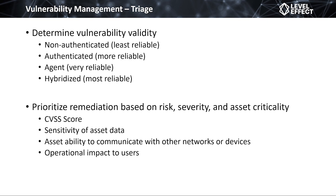We prioritize internet-accessible assets — especially those that can be compromised through remote code execution — before moving to internal ones. However, that call isn't always easy: just because a system is critical and can't communicate to the internet doesn't mean the other systems it talks to can't get there. An adversary could take advantage of a medium-level vulnerability on one asset and then pivot to that internal critical asset, which is exactly what happens during penetration testing.